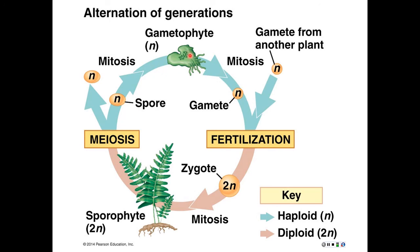What happens is this haploid cell will germinate and through mitosis will become a multicellular gametophyte. In the case of the fern, it's kind of a little heart-shaped, relatively small structure, but it is multicellular. The gametophyte — literally meaning 'gamete plant' — has structures that will produce gametes.